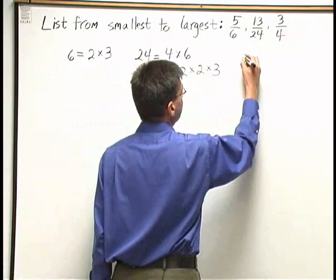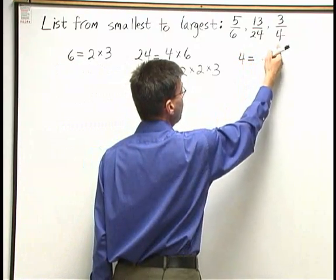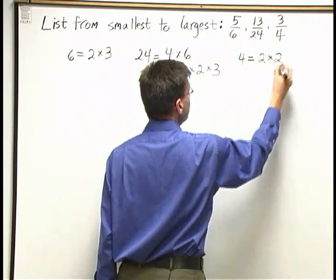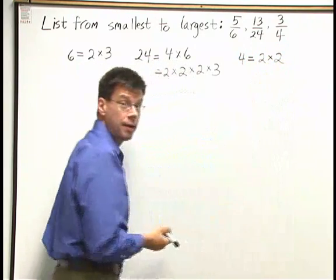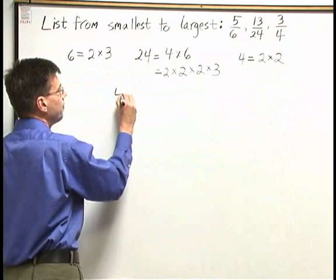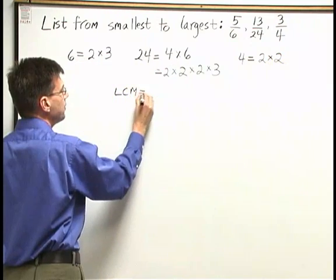Now let's look at 4, my third denominator. 4 I can factor as 2 times 2. And I have primes there, so I'm done factoring 4. Now let's put together the LCM of these 3.